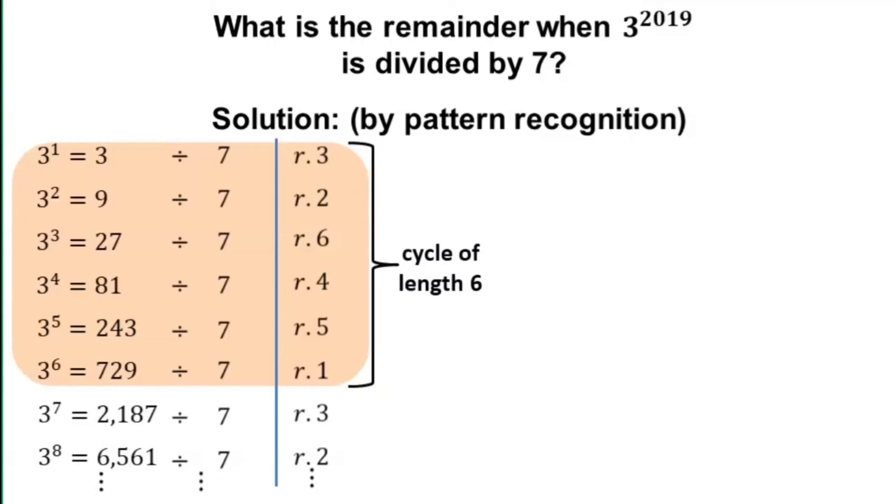What we're going to do next is divide the exponent of 3 in the given problem by the length of the cycle. We have 2019 divided by 6, which will give us a remainder of 3 in the exponent.